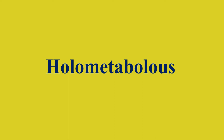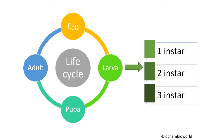Drosophila melanogaster is holometabolous because it is an insect which develops in 4 stages: egg, larvae, pupa and adult. It has 3 larval stages which are usually termed as instars, separated from each other by molts. Both the size of the larvae and the number of teeth on the dark colored jaw hooks are indications of the instar of the larvae.